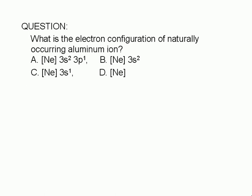What is the electron configuration of naturally occurring aluminum ion? A. Neon core 3s² 3p¹, B. Neon core 3s², C. Neon core 3s¹, or D. Neon core.